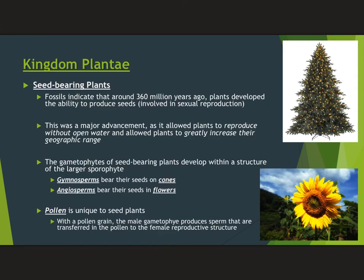The next evolutionary step, roughly 360 million years ago, was the production of seeds — a much better way for plants to reproduce, spread out, increase their range, and survive on land. Seeds allow plants to reproduce without open water. In seed-bearing plants, you need a way to develop and disperse seeds. We have two groups: gymnosperms form seeds on cones, and angiosperms form seeds in flowers.